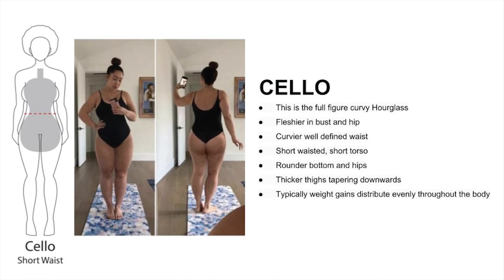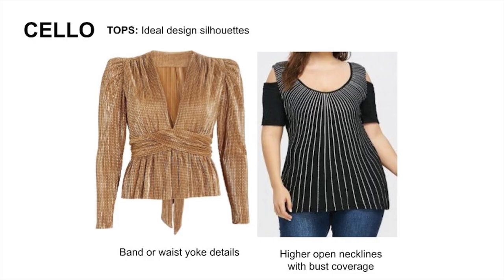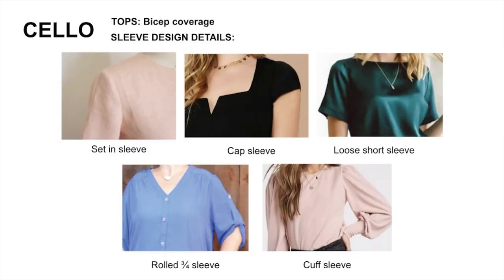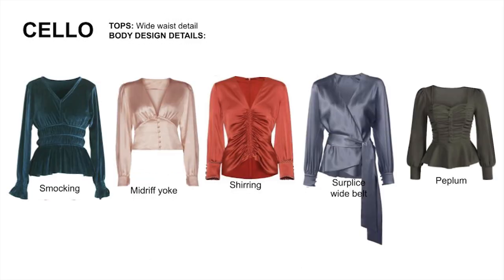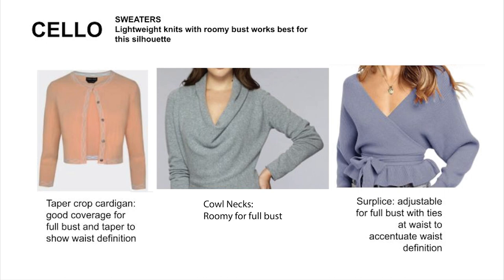Typically weight gain is the same as the hourglass. For tops, here are two key design details to look out for. Notice the emphasis on the waist and a slightly higher open neckline. These are examples that work best for fleshier arms. Here are the design details accentuating the voluptuous shape. For sweaters, make sure it's a lightweight knit with these design elements.